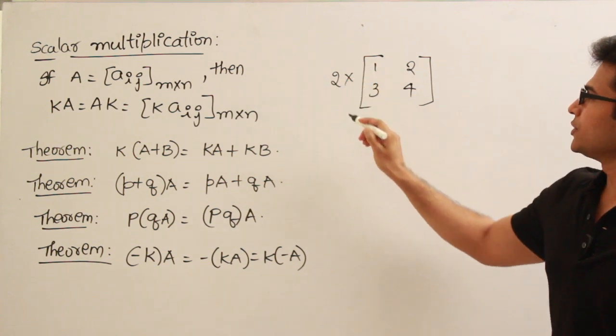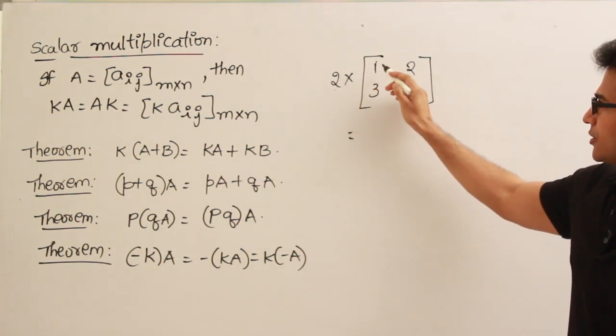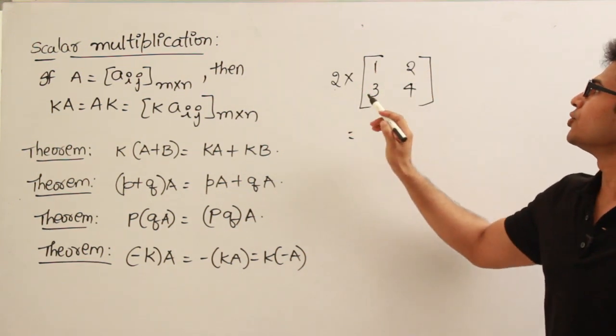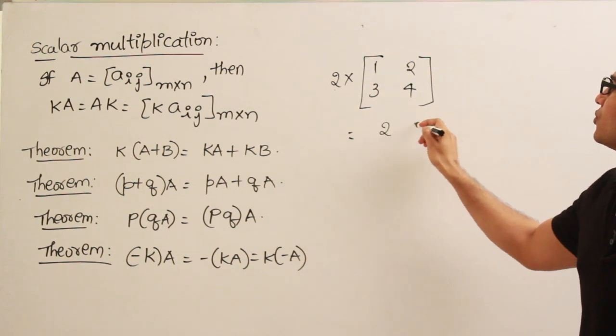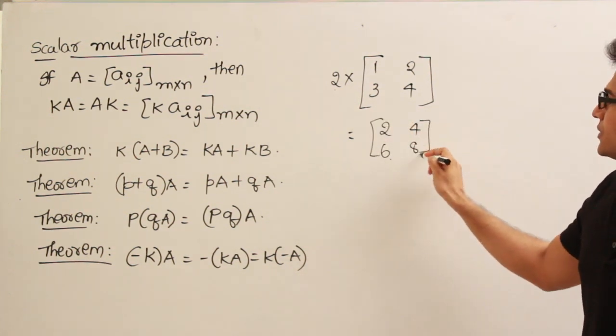If I multiply it with a number instead of a matrix then it is called scalar multiplication. So let's say I am multiplying with 2, then what do I get? You have to take each element in the matrix and multiply with the number 2. Then what do we get here? 2, 4, 6, 8. So this is the scalar multiplication.